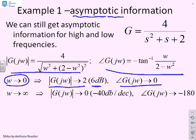What happens as ω goes to infinity? The gain goes to 0 with a slope of minus 40 decibels per decade, because we have s squared in the denominator which dominates for large frequencies. Similarly, the phase goes to minus 180. We have clear asymptotic information.